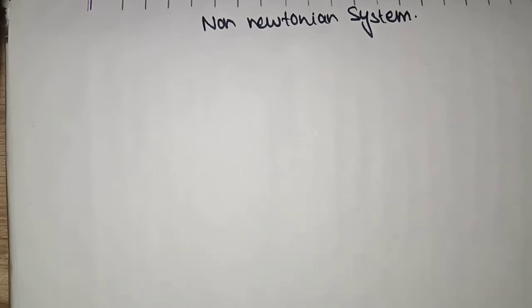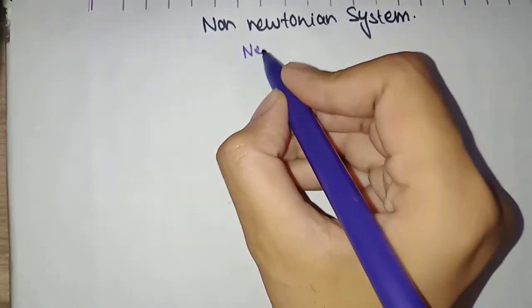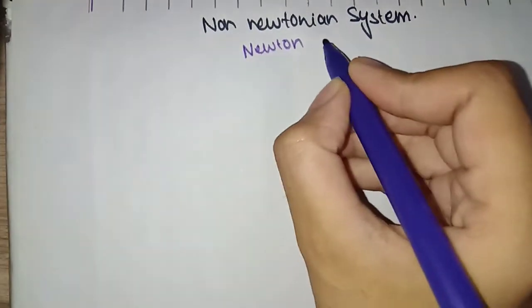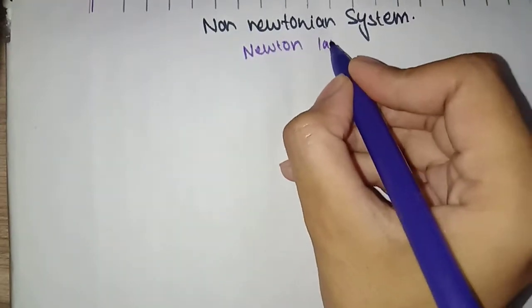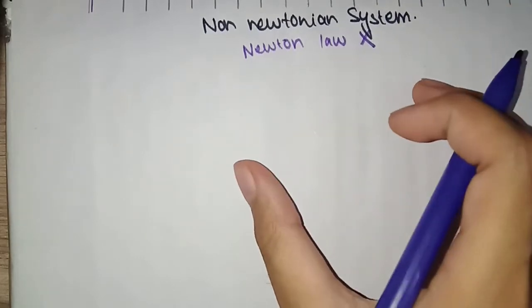First of all, let's discuss non-Newtonian systems. A Newtonian system follows Newton's law, while a non-Newtonian system doesn't follow Newton's law.